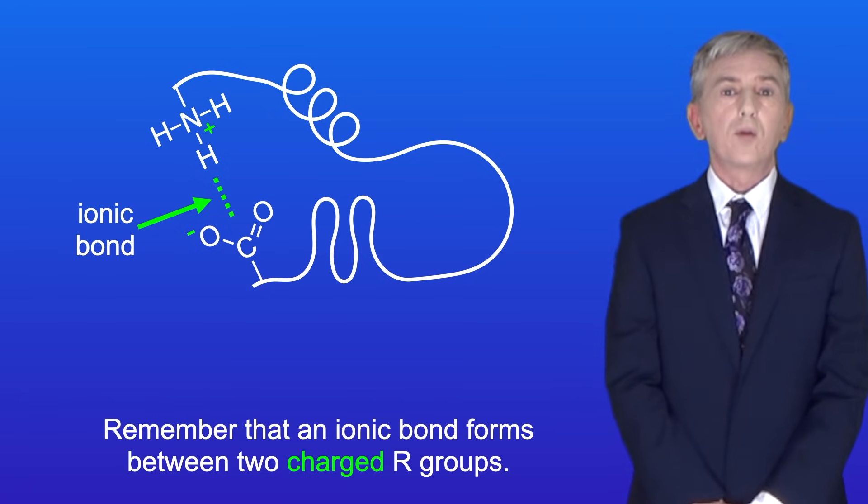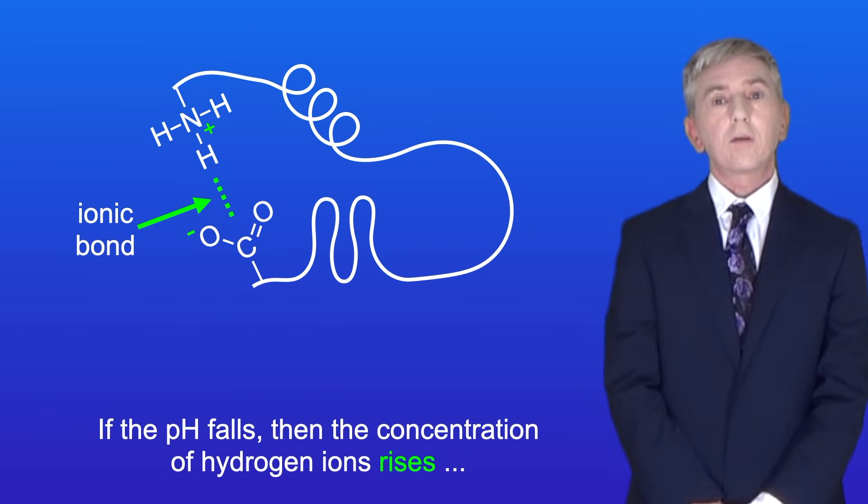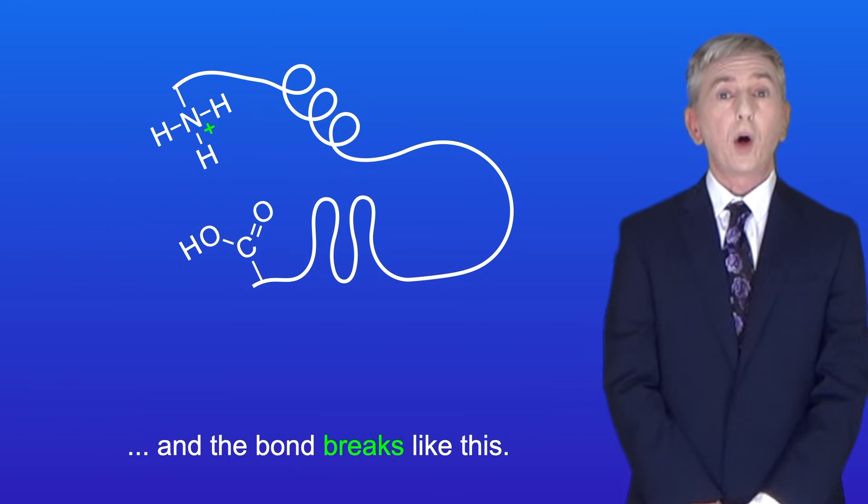Remember that an ionic bond forms between two charged R-groups. If the pH falls, then the concentration of hydrogen ions rises, and the bond breaks like this.